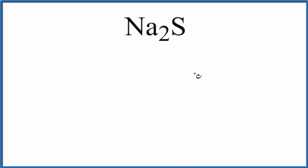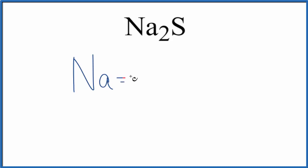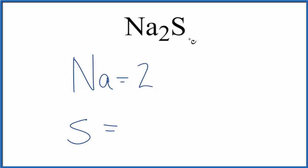In this video, we'll find the number of atoms for Na2S. This is sodium sulfide. Let's first write the element symbols here. We have sodium and we have sulfur. For sodium, we can see the subscript of two, so we have two sodium atoms. And then for sulfur, it's not written — we assume there's a one here, so we have one sulfur atom.